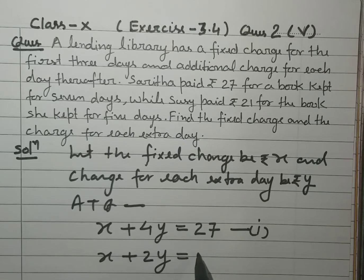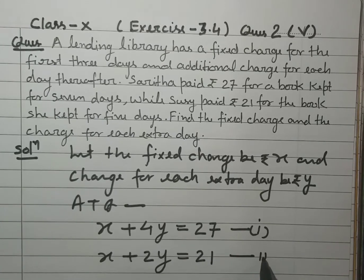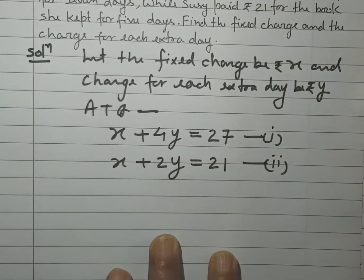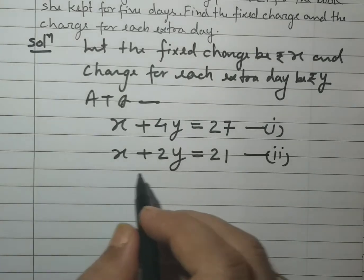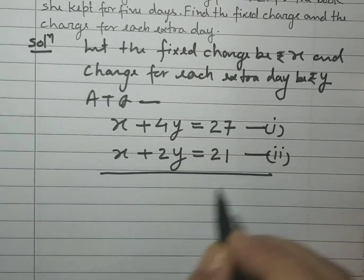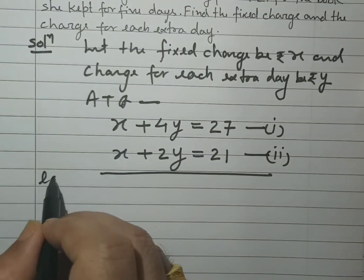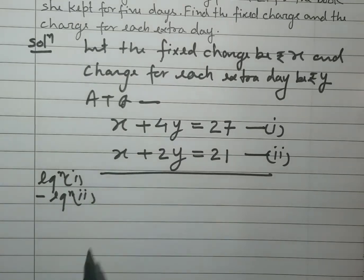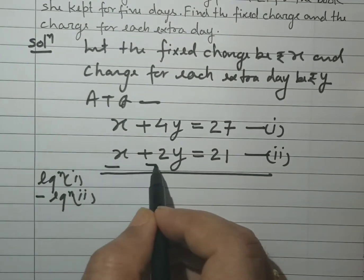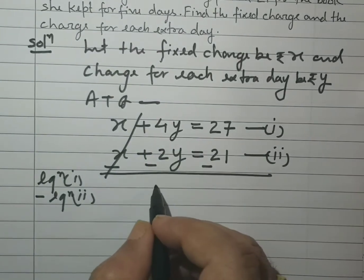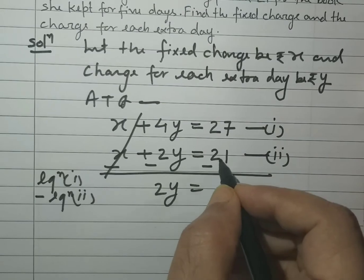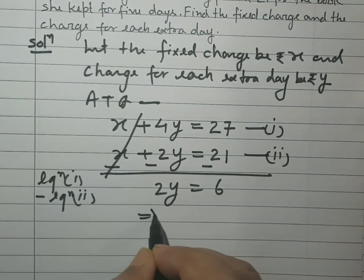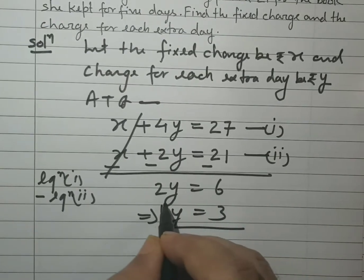Sashi's total rent is Rs. 21, giving us X + 2Y = 21 — that is Equation 2. Now students, both equations are formed easily. We will solve them using the elimination method. Subtracting Equation 2 from Equation 1: the X terms cancel, and 4Y minus 2Y gives 2Y = 27 minus 21 = 6.